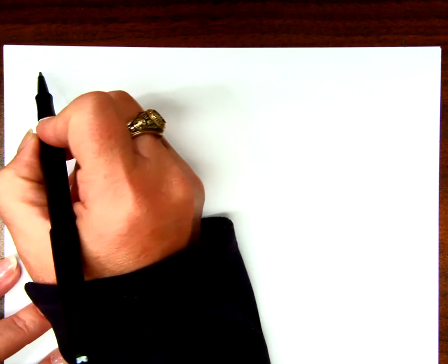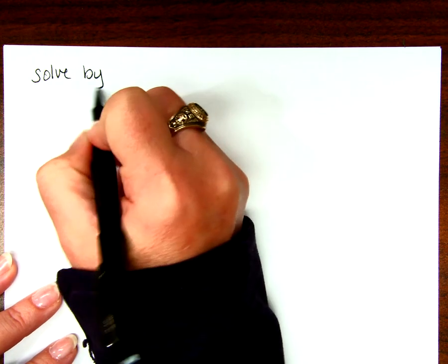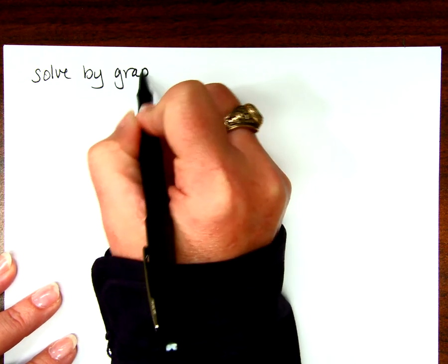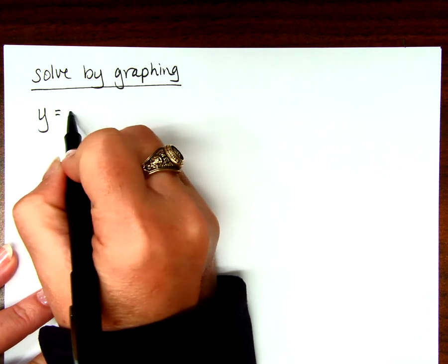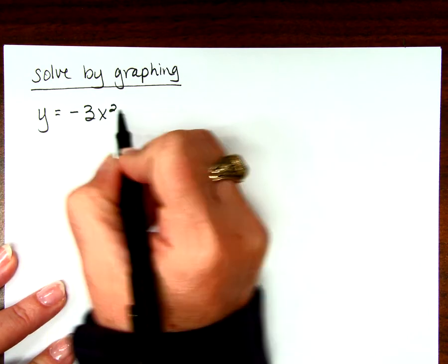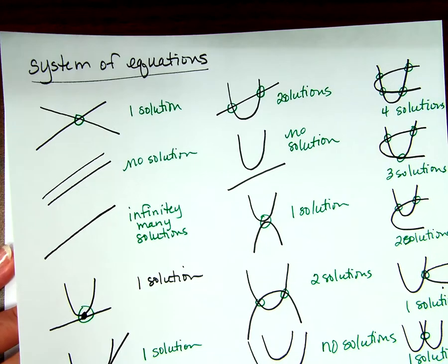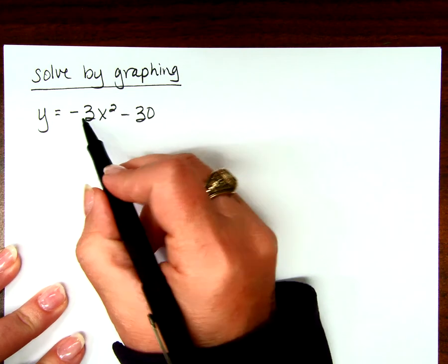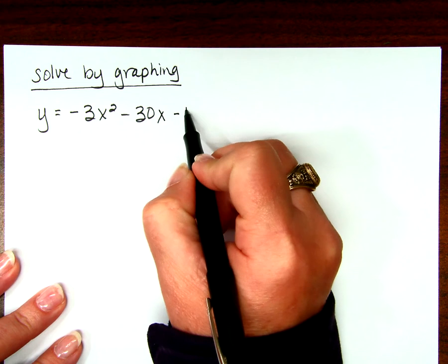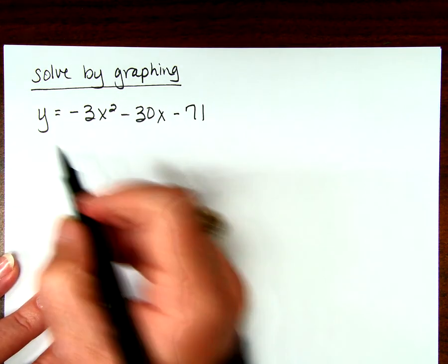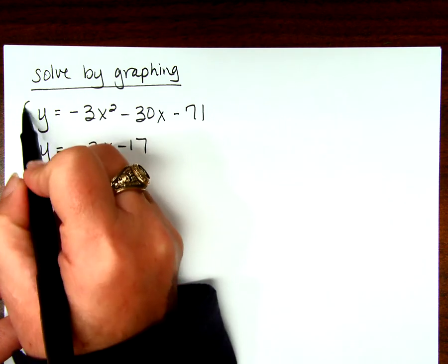I will make a compromise with you though. When we're solving by graphing, what are we looking for? Where they intersect, just like this whole conversation we just had — this whole conversation was based on the graphs. So our first equation is y equals negative 3x squared minus 30x minus 71. Our second equation is y equals negative 3x minus 17. Tell me what you know about this system.